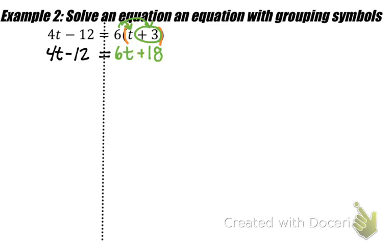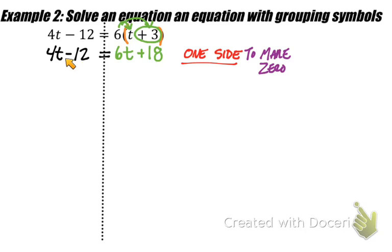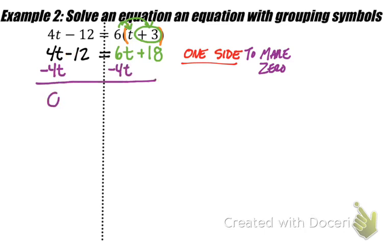Like in the previous example, we choose where we want our variables to go — variable terms on one side, everything else on the opposite side. To make the 4t become 0 on the left, we subtract 4t from both sides. We line it up with the 6t, its like term. So 4t minus 4t gives us 0, and we're left with negative 12 equals 2t plus 18.